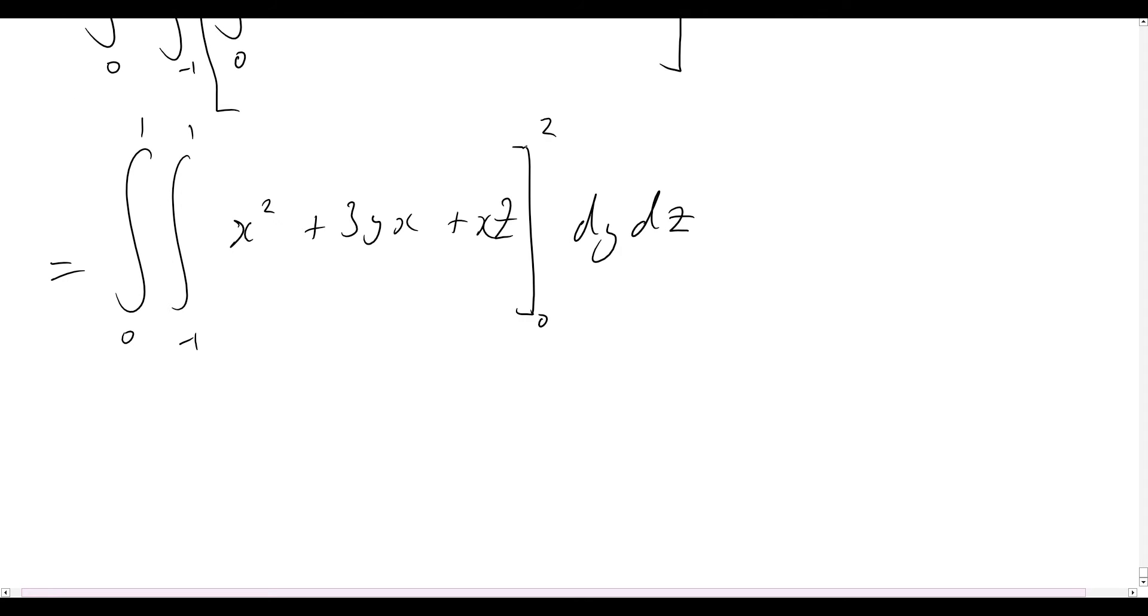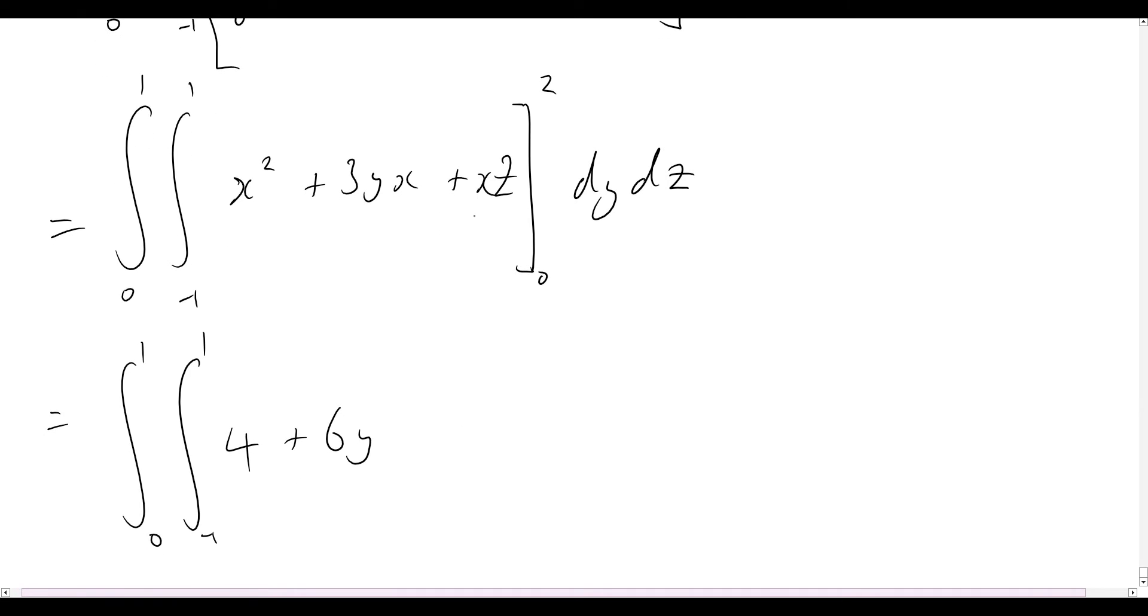So we know that we just need to start substituting these values in and evaluating what will that become. Writing out those other integration limits, let's see what we'll be left with. Well, x squared will now become 2 squared, so it'll become 4. 3yx, well, that'll just become plus 6y. And then plus xz, that's just going to become plus 2z. And when we say minus the zeros, well, we see that all of these terms would simply just become zero. So that is our dx out of the way.